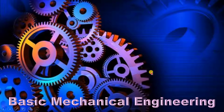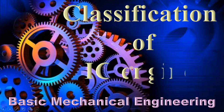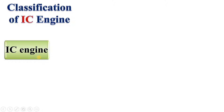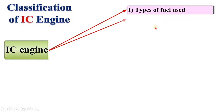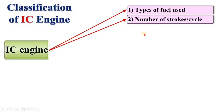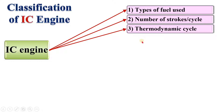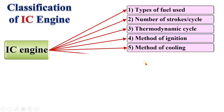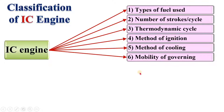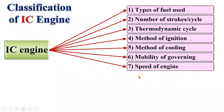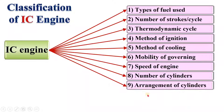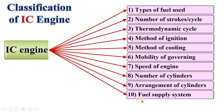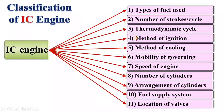Welcome to my basic mechanical engineering playlist. Today I am going to discuss the classification of IC engines. IC engines are classified in a number of ways: according to types of fuel used, number of strokes per cycle, thermodynamic cycle, method of ignition, method of cooling, mobility of governing, speed of engine, number of cylinders, arrangement of cylinders, fuel supply system, and location of valves.